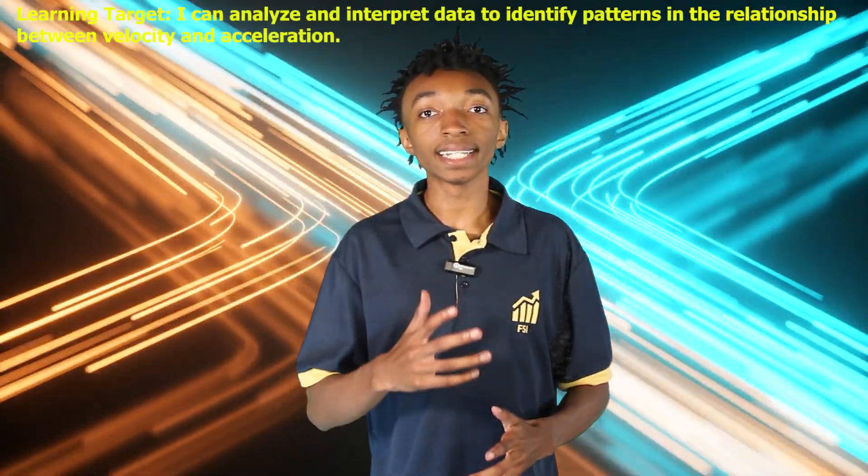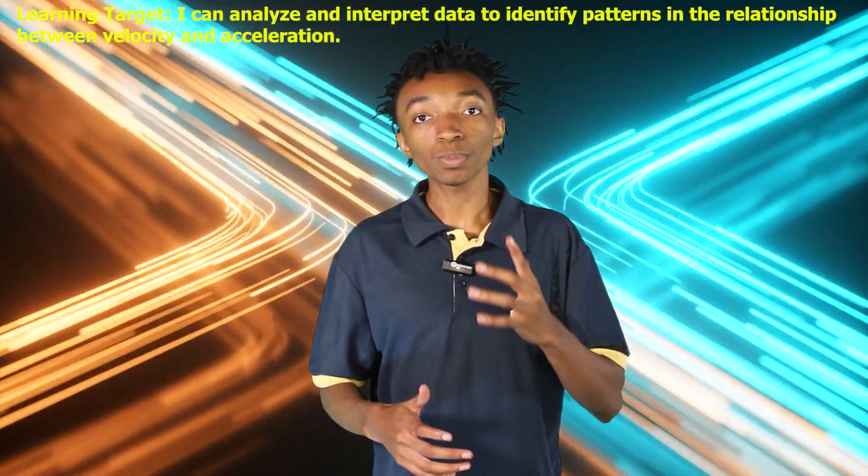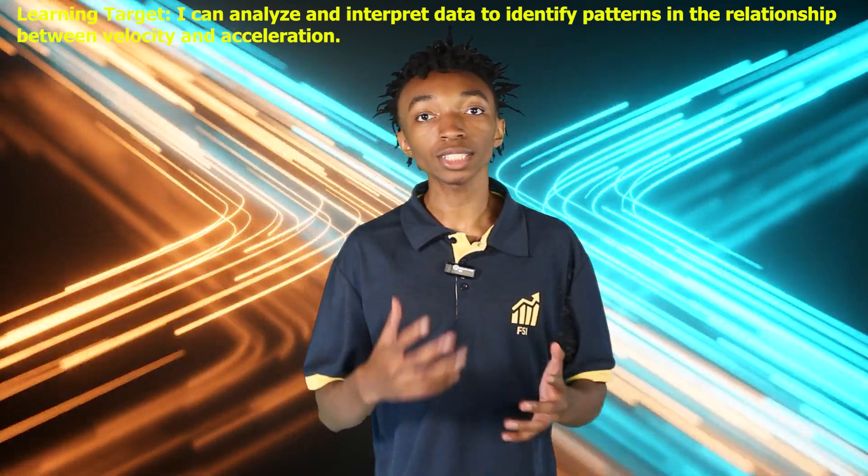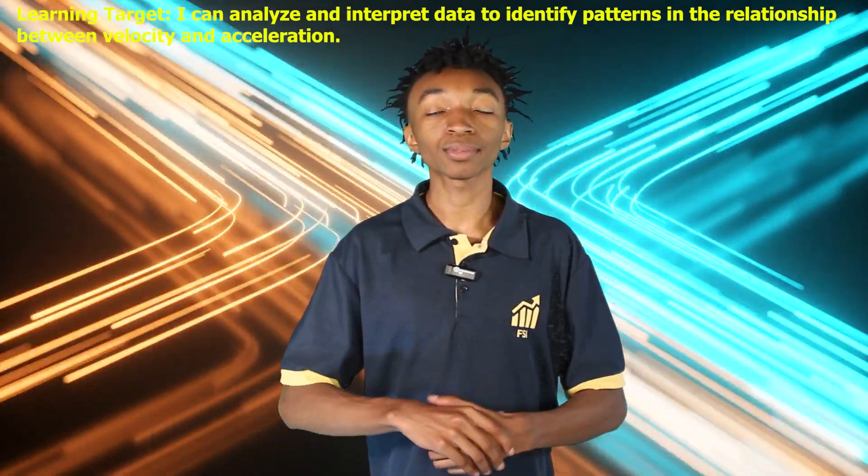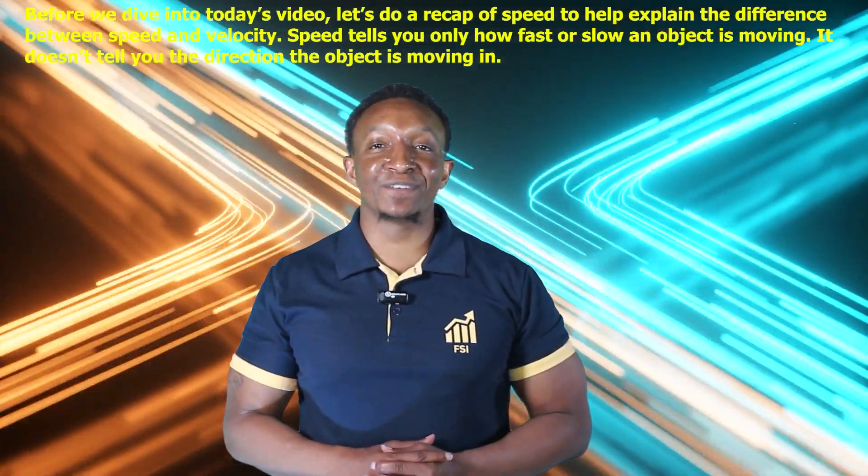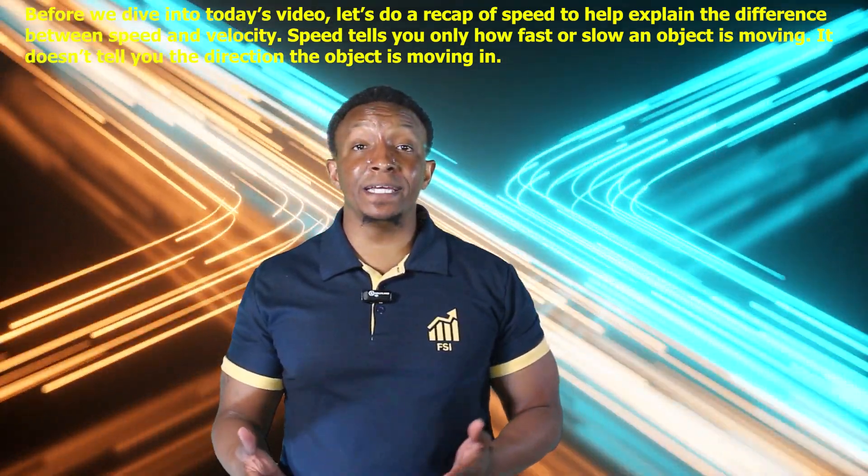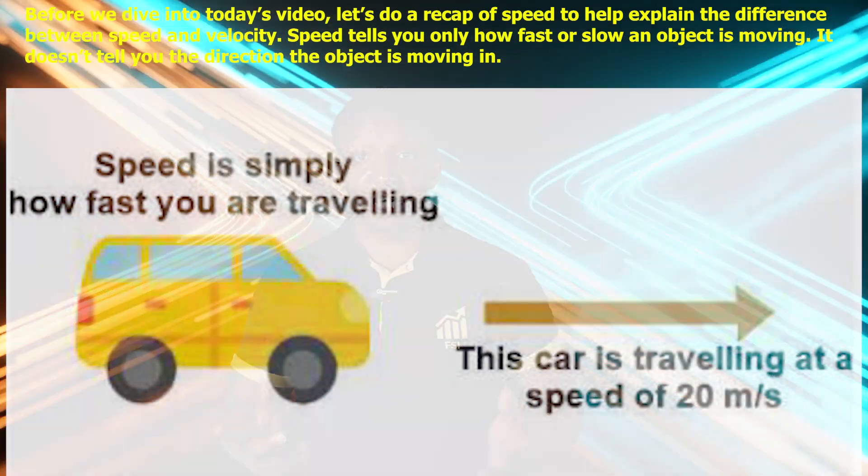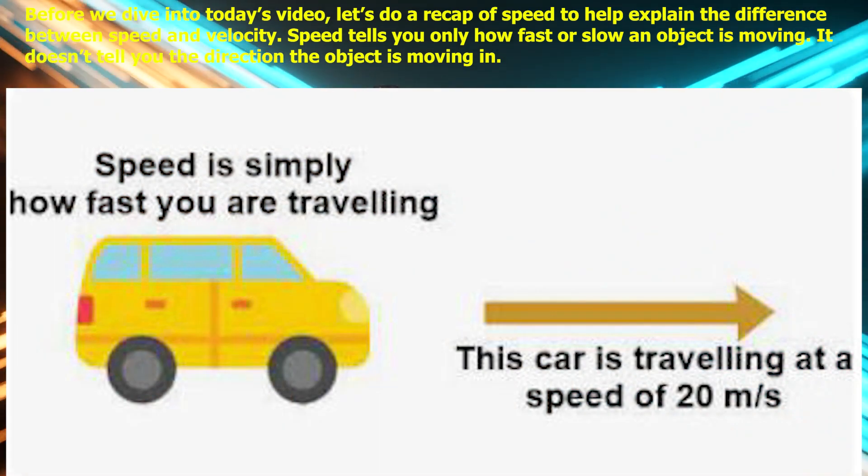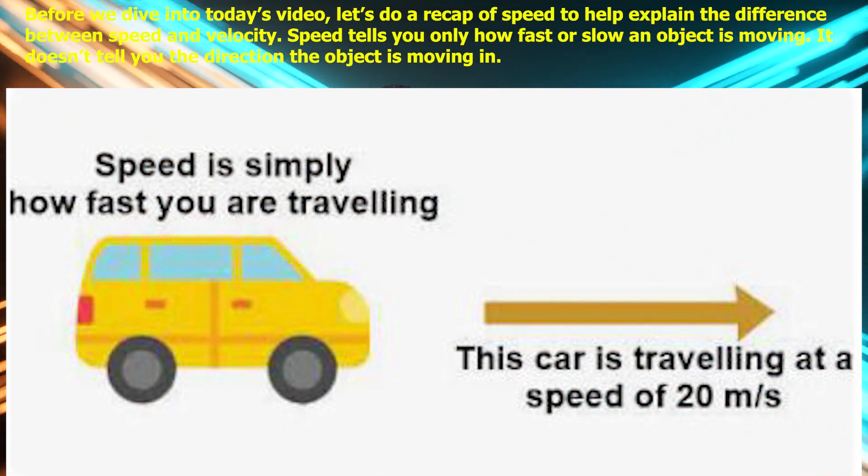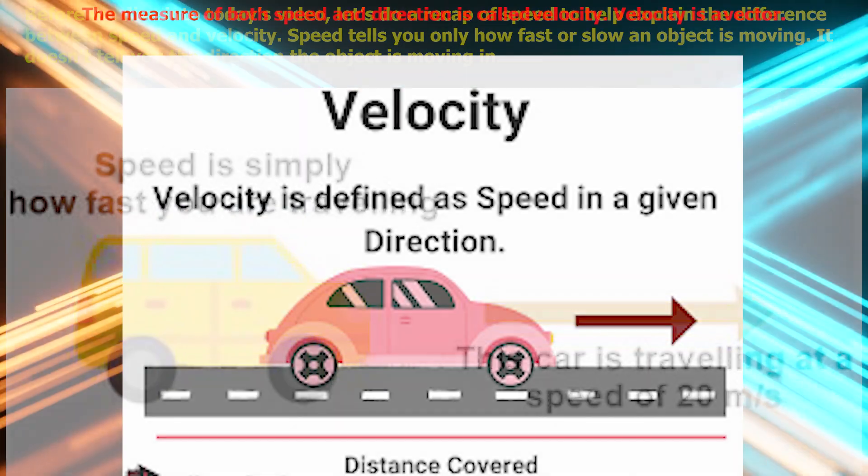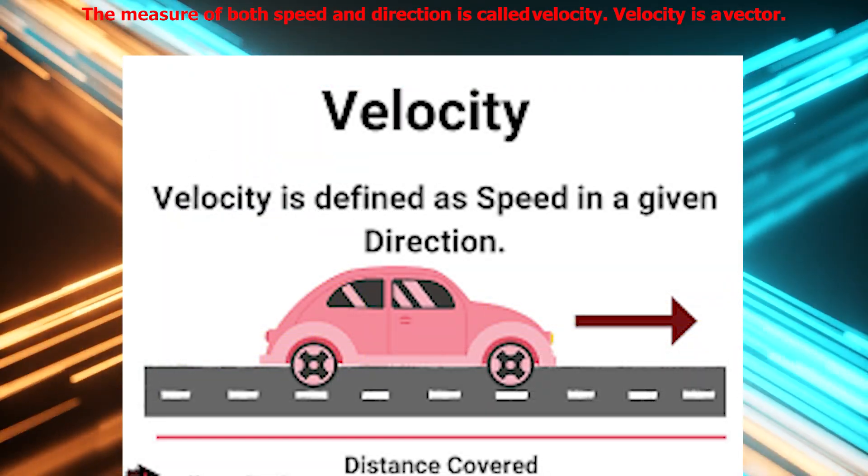Our learning target for today is, I can analyze and interpret data to identify patterns and relationships between velocity and acceleration. Before we dive in today's video, let's do a recap of speed to help explain the difference between speed and velocity. Speed tells you how fast or slow an object is moving. It doesn't tell you the direction the object is moving in.